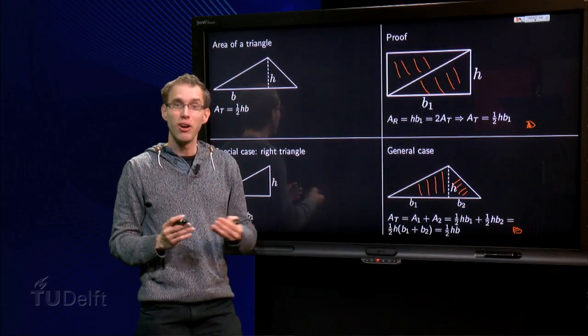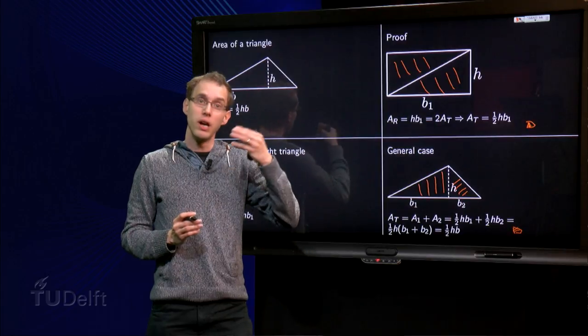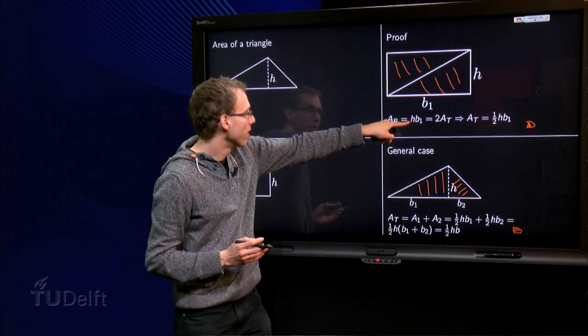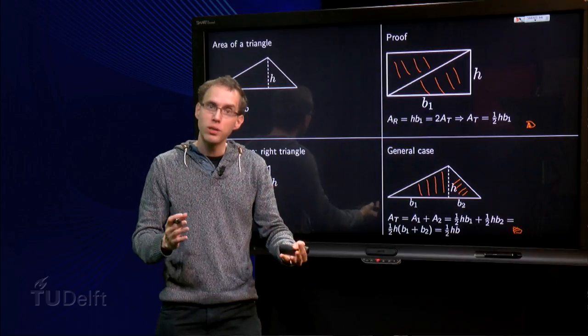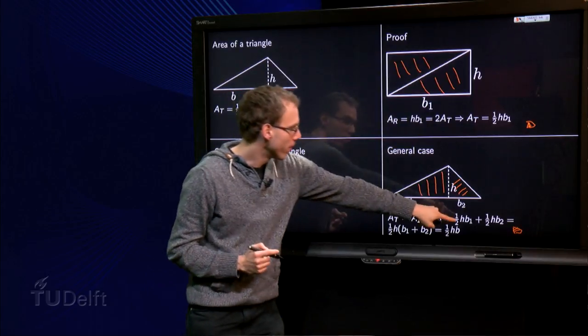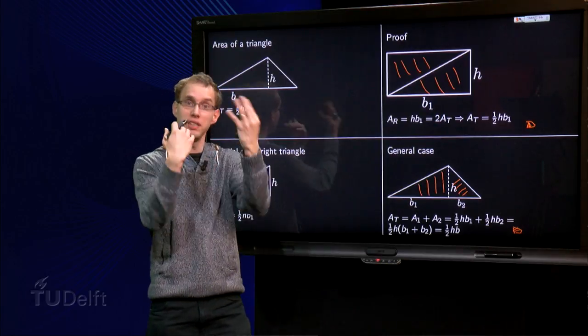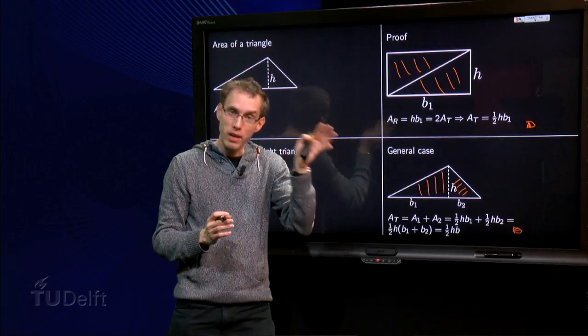So what is essential over here? We only used either an axiom, over here, or something what we had already proven, over here and over there. That's what we can use in order to prove something new. That's one essential thing.